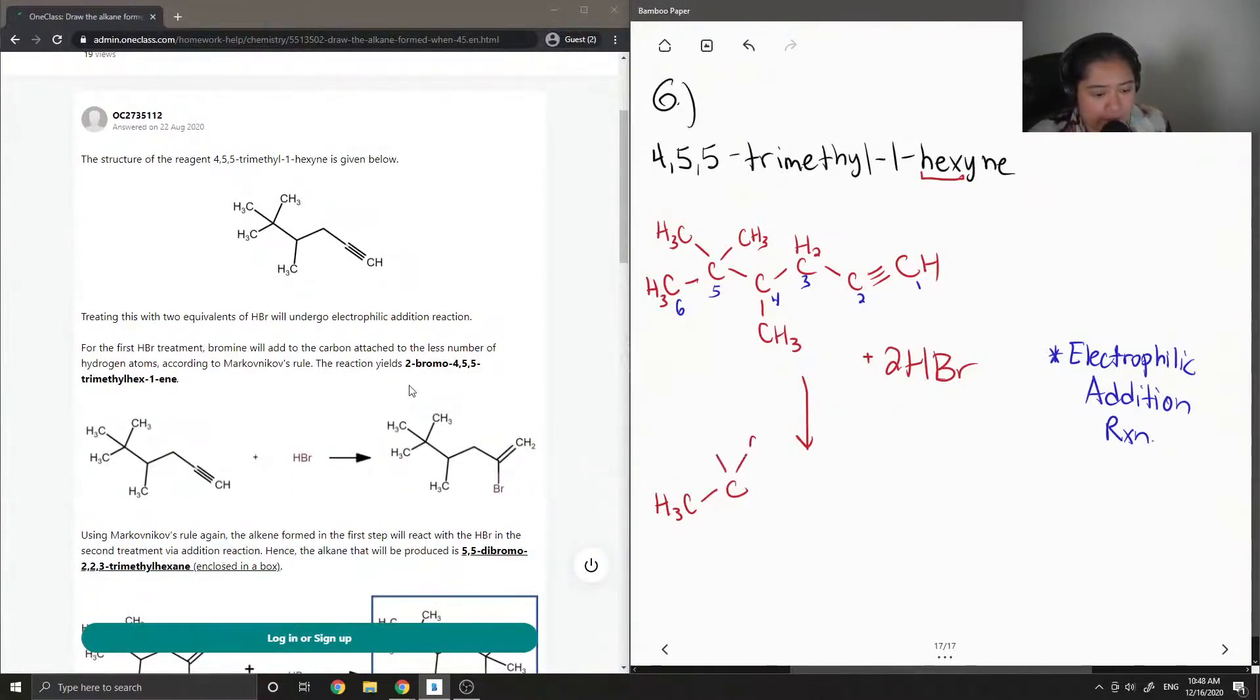Pretty much everything else stays the same. Let's just draw everything else the same. And on carbon-2 is where the two bromines will be added. And we no longer have a triple bond. It is now just a single bonded carbon, CH3.